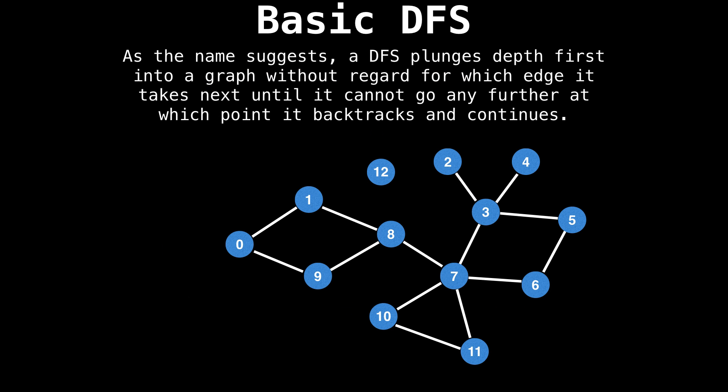So let's look at an example. As the name suggests, a depth first search plunges depth first into a graph without regard for which edge it selects next, until it cannot go any further, at which point it backtracks and continues its exploration.